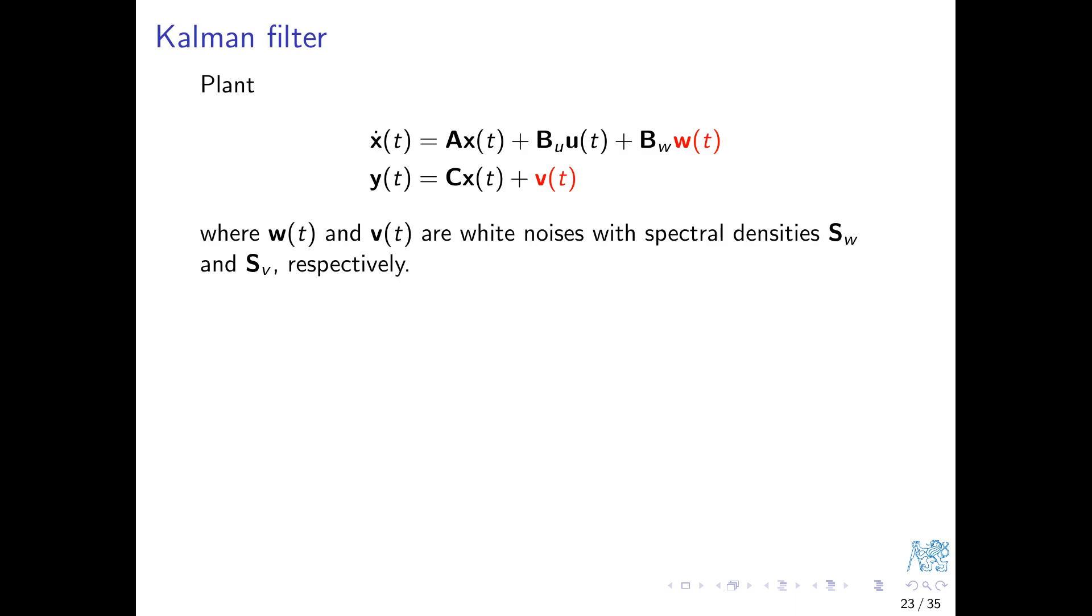What is Kalman filter then? We assume the standard state space model is augmented with two inputs: W, the disturbance entering the state equation, and V, the measurement noise that adds to the measured output. Both are regarded as random variables, white noise with Gaussian normal distribution, with spectral densities SW and SV, respectively. Now the origin of the letter G is clear. G stands for Gaussian.